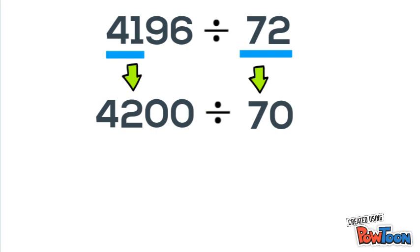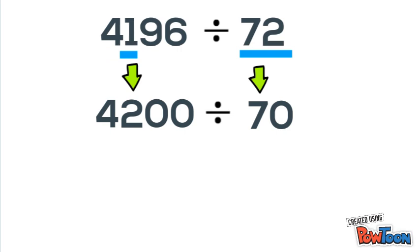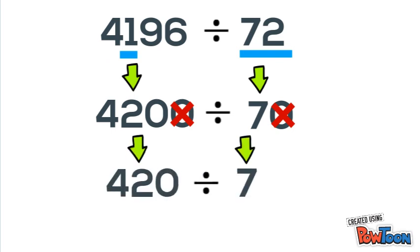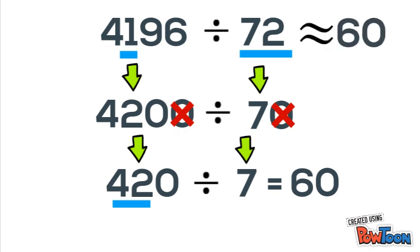So now we can cross off a zero in the divisor and a zero in the dividend, which leaves us with 420 divided by 7. Again, we just look at 42 and think 7 times 6 is 42, so we know 42 divided by 7 is 6, and we put our zero back in our answer, so our answer is 60.